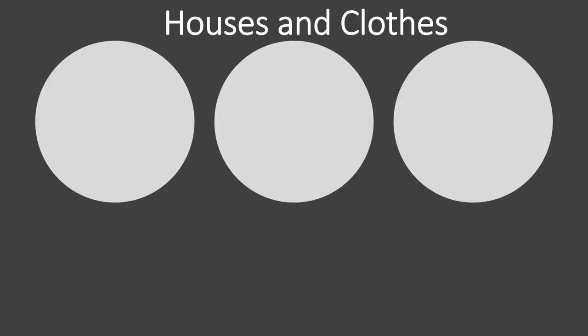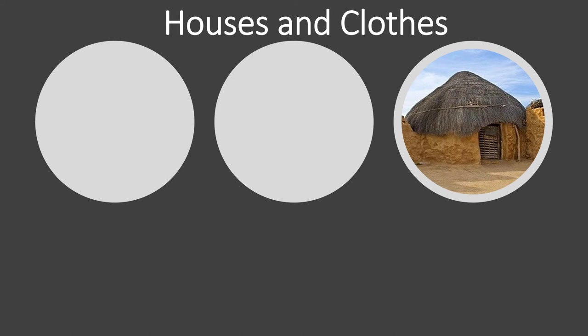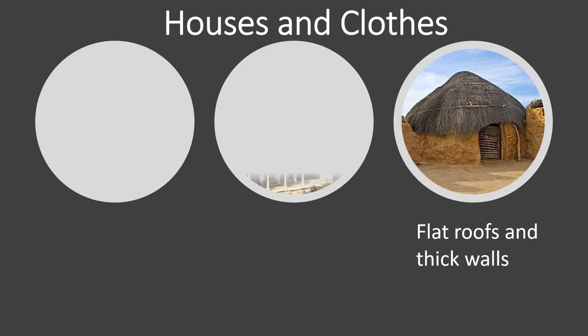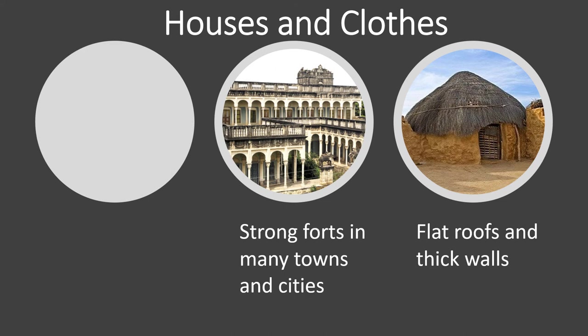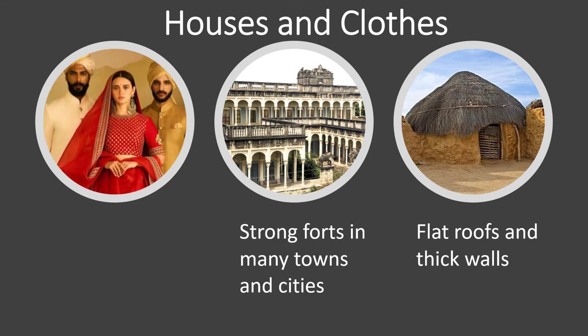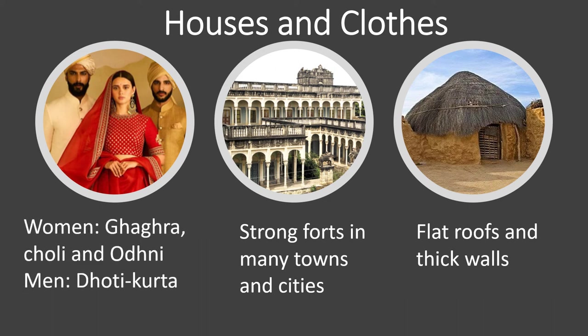Let us know about houses and clothes. Houses in the desert are designed keeping the weather conditions in mind. They have flat roofs as there is hardly any rainfall. The walls are thick to keep the heat out and the windows are small. The strong forts in many of the towns and cities tell us about the past. The people of Rajasthan love to wear colorful dresses. Men wear dhoti kurta and colorful turbans, while women wear ghagra choli and odhni.